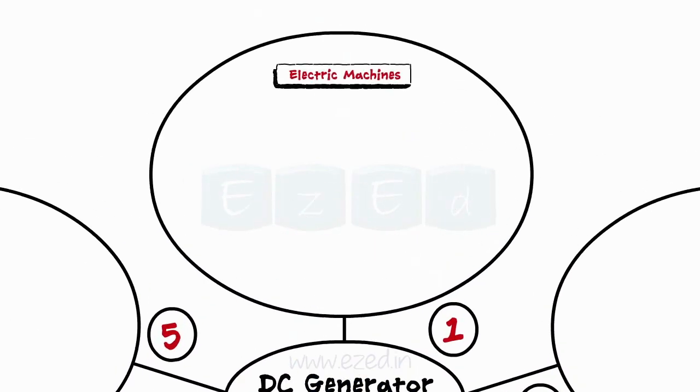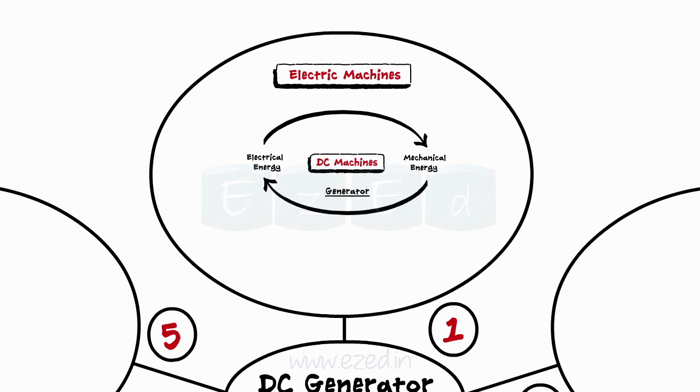Now, let's review. The device that converts the electrical energy into mechanical or vice versa is called as the DC machine. There are two types of machines, the generator and the motor. Any machine can act as a motor as well as a generator.